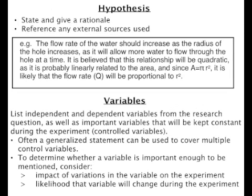In the hypothesis you must state the type of relationship you think there will be between the independent and dependent variables and also give some kind of rationale based on your own experience. Some teachers require that you research your hypothesis for more robust justification, but as you will be planning these labs in class you will not have a chance to do any research. The hypothesis for the example is: the flow rate of the water should increase as the radius of the hole increases, as it will allow more water to flow through the hole at a time. It is believed that the relationship will be quadratic, as it is probably linearly related to the area, and since A = πr², it is likely that the flow rate Q will be proportional to r².